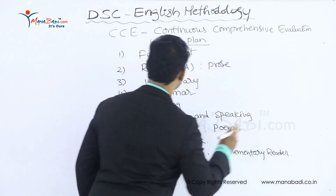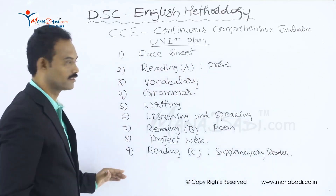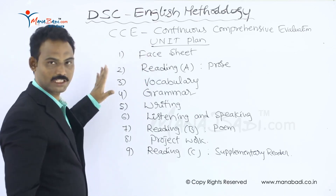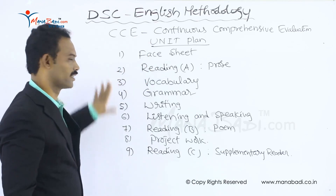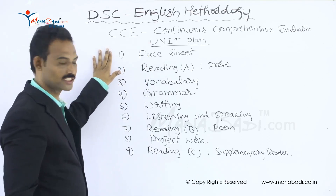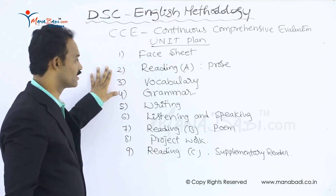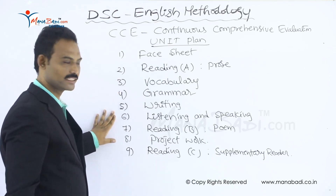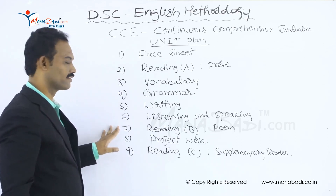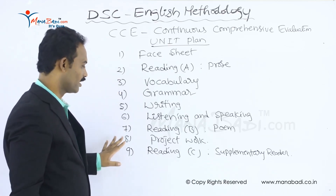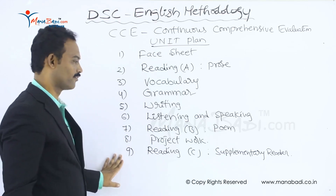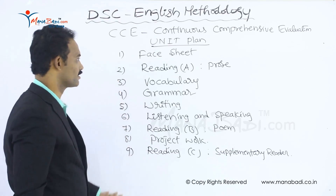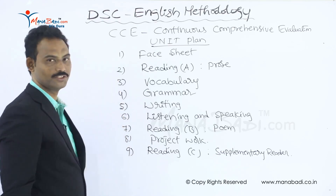This is the process and this is the order to cover the entire unit. One unit plan we have to start like this: first, face sheet; second, prose lesson and vocabulary; then grammar and writing skills; listening and speaking skills; then Reading Part B, that is poem; then project work; and after that Reading Part C, the supplementary reader. These are the areas to be covered in one unit.